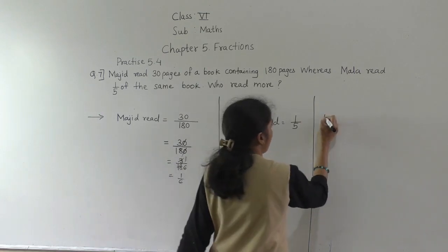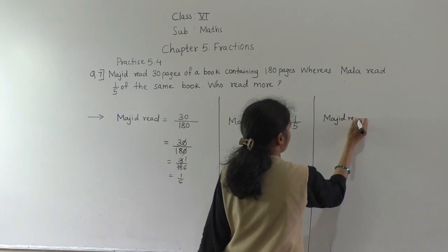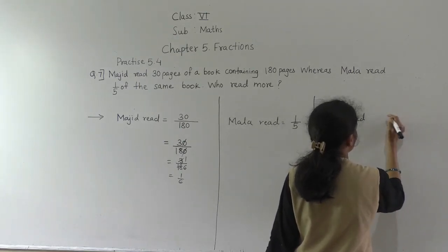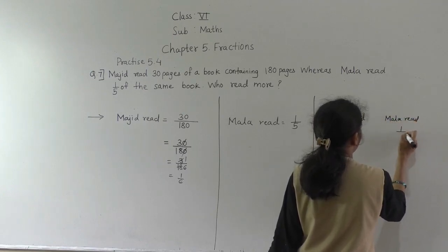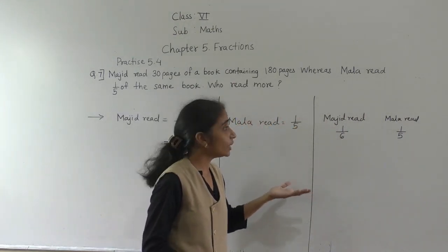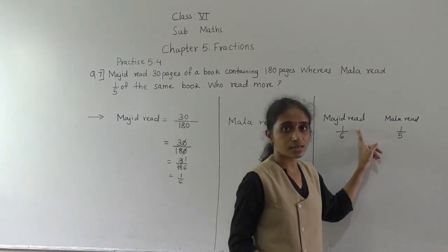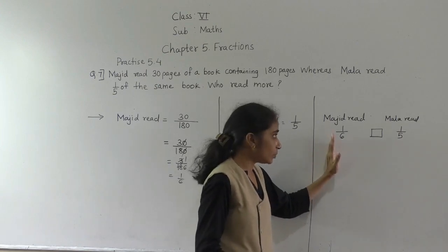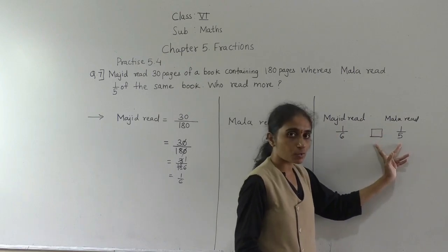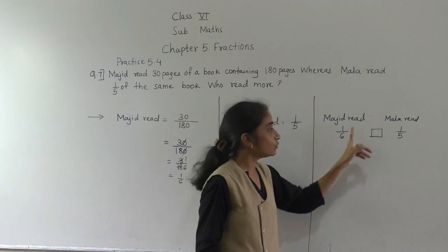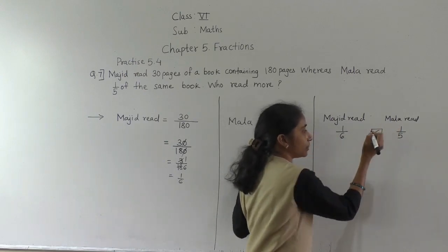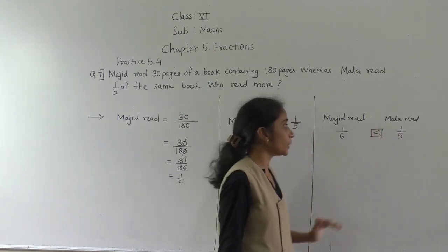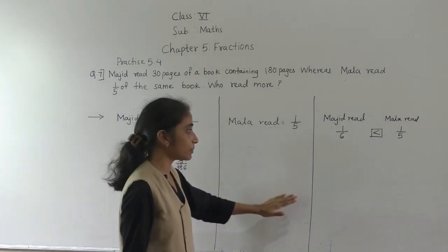And Mala read 1 fifth. Now numerators are same — both are 1. If numerators are same, the smaller denominator is the greater number. 1 fifth has a smaller denominator than 1 sixth, so 1 fifth is greater. Therefore Mala read more pages.